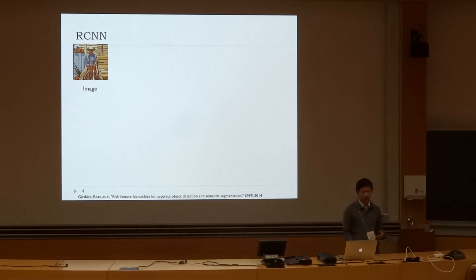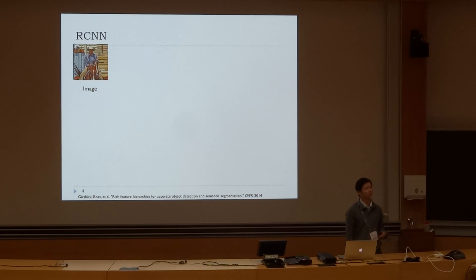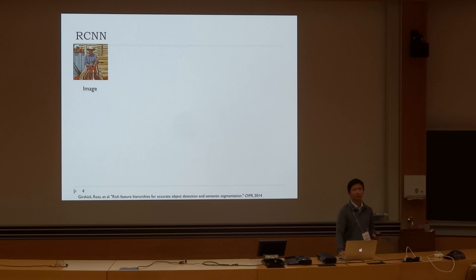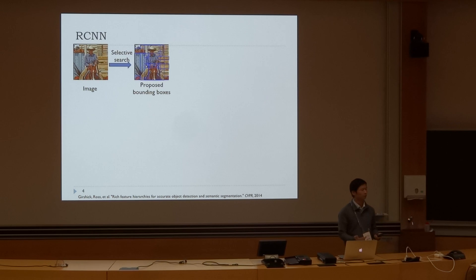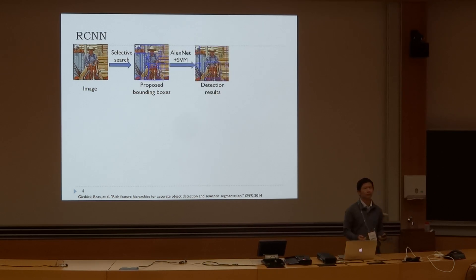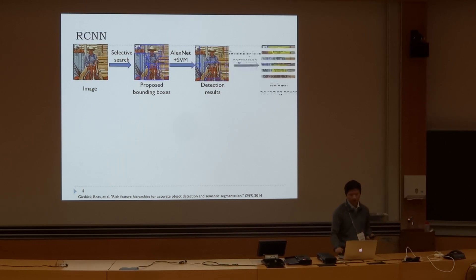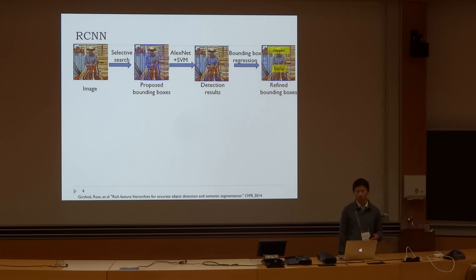Before we introduce our approach, we would like to introduce the baseline approach, which is the excellent work of RCNN. From the input image, we use selective search for proposing the bounding boxes. Then the index map is used for extracting features, and SVM is used for classification. Finally, bounding box regression is used for refining the bounding box.